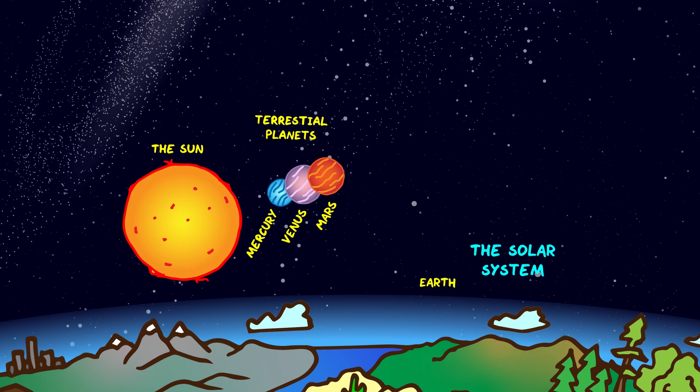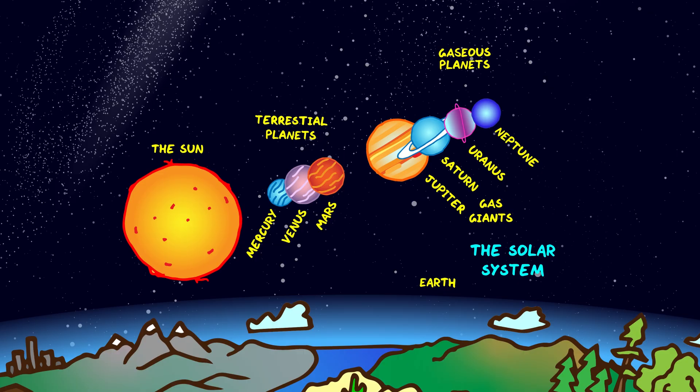Around the Sun orbit the terrestrial planets which are made mostly of silicate rocks or metals, and the gaseous planets which are split into the gas giants which are mostly made of hydrogen and helium, and the ice giants which are made of heavier elements like oxygen, carbon, nitrogen and sulfur.